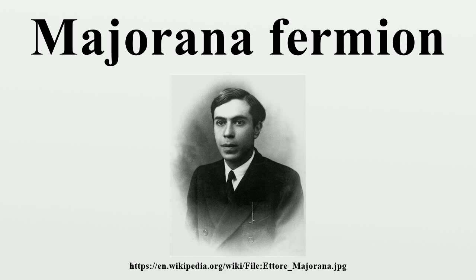If right-handed neutrinos exist but do not have a Majorana mass, the neutrinos would instead behave as three Dirac fermions and their antiparticles, with masses coming directly from the Higgs interaction, like the other standard model fermions. The seesaw mechanism is appealing because it would naturally explain why the observed neutrino masses are so small. However, if the neutrinos are Majorana then they violate the conservation of lepton number and even B-L.